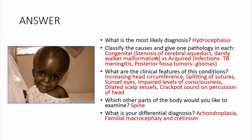Clinical features: increased head circumference (a newborn's head circumference is roughly 35 cm at birth); wide splitting of the sutures; sunset eyes due to compression of the upward-gaze centers in the brainstem; impaired level of consciousness; dilated scalp vessels; and a cracked-pot sound on percussion of the head. Examine the spine because there may be associated spinal defects.